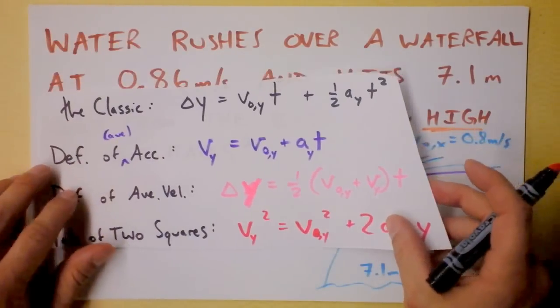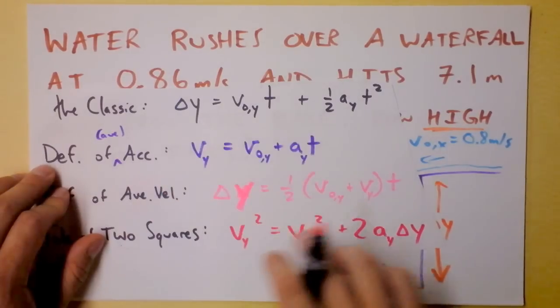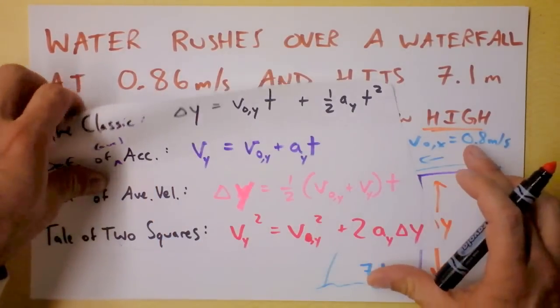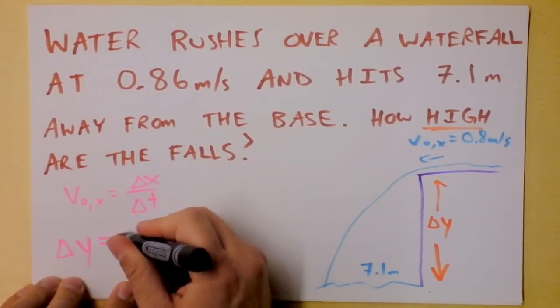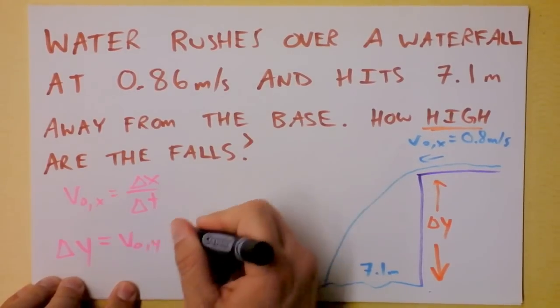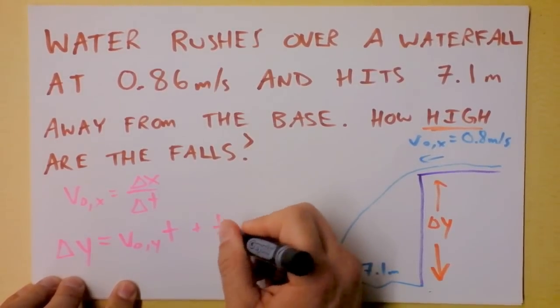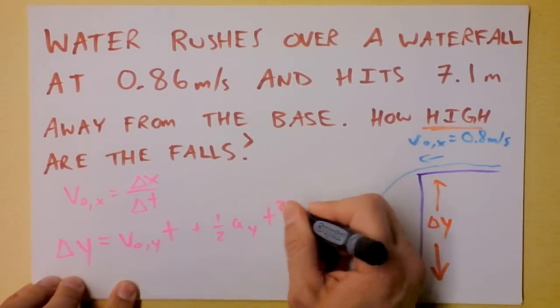Let's go over here. For delta y we've got a lot of equations. I'm just going to pick the classic and we'll talk about it later. Delta y, let's do this linearly. Delta y is the initial velocity in the y direction times time plus one half acceleration in the y direction times time squared.